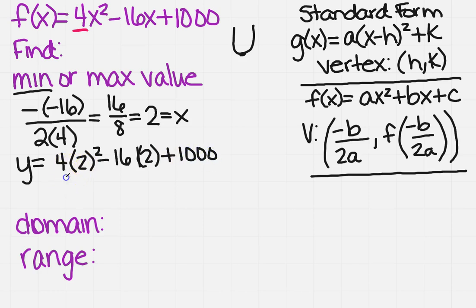And this is going to be 4 times 4 is 16 minus 32 plus 1,000. And that should give you 984.